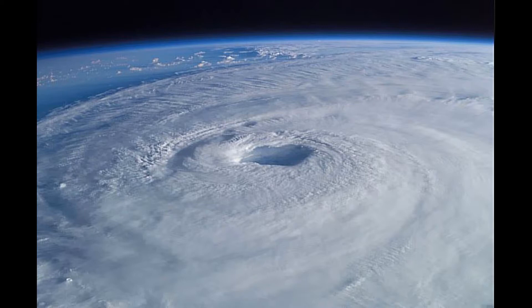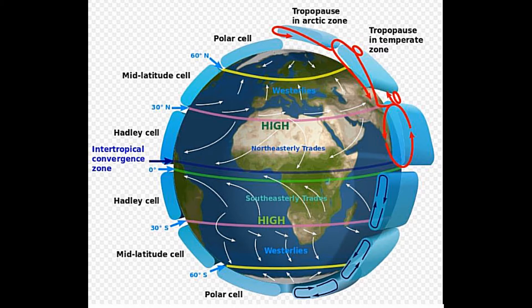During the Ice Age, the atmospheric circulation cells would have been radically different in size. When the polar cells of the earth were huge, the Ferrel and Hadley cells would be compressed. This compression would increase the density of atmospheric energy, making storms much more common and more destructive. The compressed Ferrel cell would during this time lay across most of what we now call the Sahara Desert.